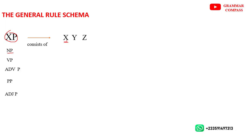All the things that you see here are constituents of the X Phrase. This means that X is a constituent of XP, Y is also a constituent of XP, and Z is also a constituent of XP.